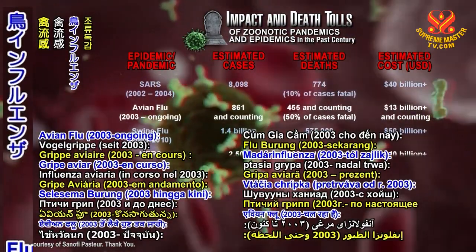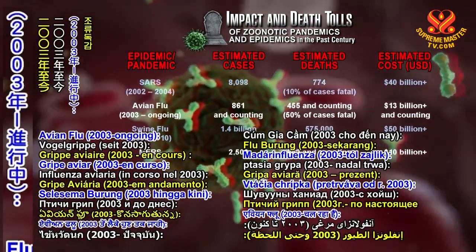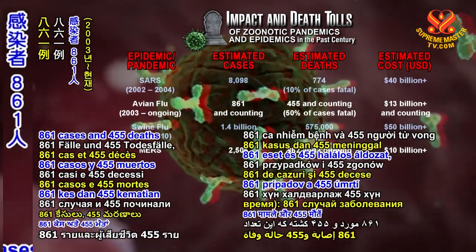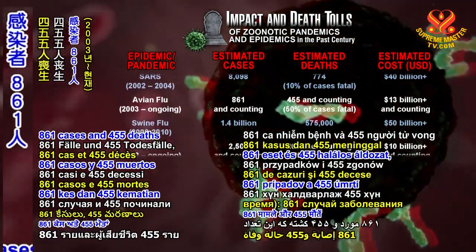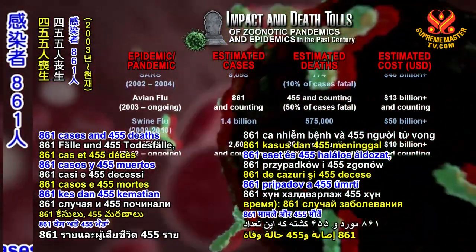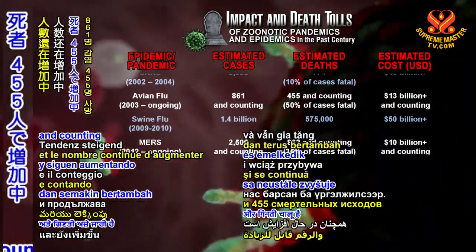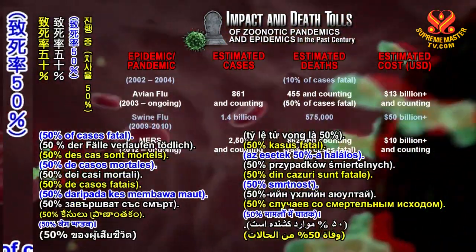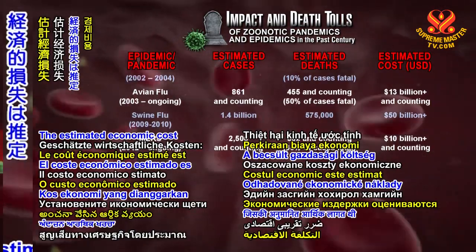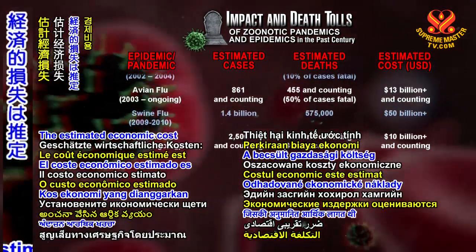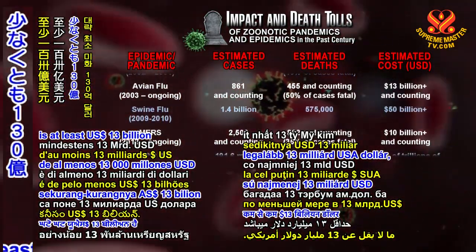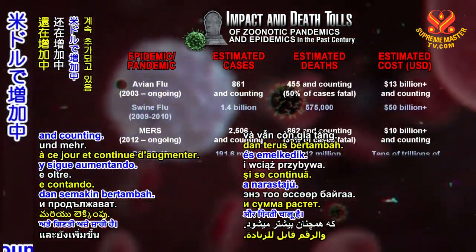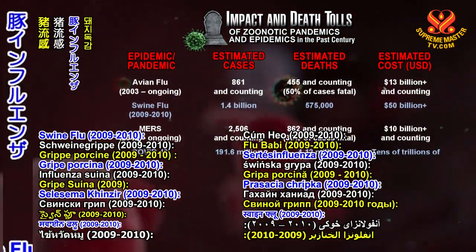Avian flu, 2003 to ongoing: 861 cases and 455 deaths and counting, 50% of cases fatal. The estimated economic cost is at least 13 billion U.S. dollars and counting.